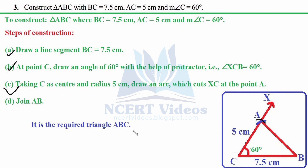This is the required triangle ABC with the given measurements. That is how you use the side-angle-side property of congruence of triangles. In a later chapter we will study other properties of congruence of triangles.